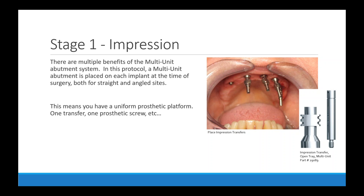Not to belabor the point, but this patient shows up at your office wearing their multi-unit abutments already torqued down — they're never going to come off. You're just going to unscrew the temporary prosthesis and start your impression. You get all the benefits of 'one abutment, one time' — having that final abutment placed at the time of surgery and the tissue health around the implant site — plus the simplified prosthetic platform. We do ask for an open tray impression because it's that much more accurate; the location of all multi-unit abutments is imperative. We can't move forward until the master model reflects exactly where these are.